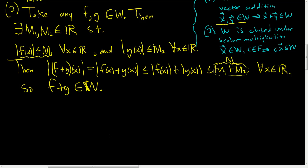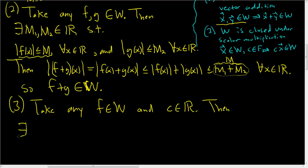So that shows closure under vector addition. Now we just have to show closure under scalar multiplication. So let's go ahead and do that. And then we're done. So 3, take any F in W, and scalar C in the field of real numbers. Then as before, we go through the same game. We write down what it means for F to be in W. It means there is a constant M in R such that the absolute value of F of X is less than or equal to M for all X in R.